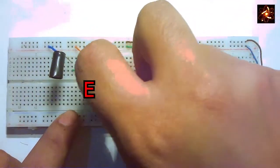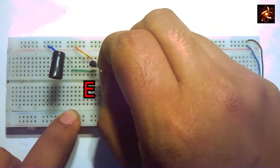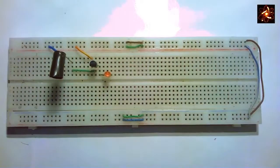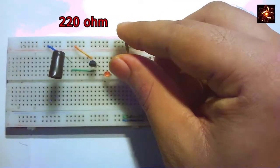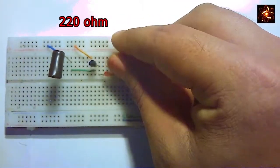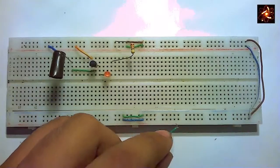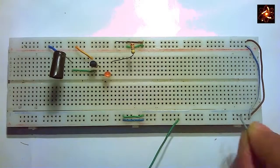The positive terminal of the LED is connecting in the emitter pin of transistor. Now ground the LED with 220 ohm resistor. Also connect power in the circuit.